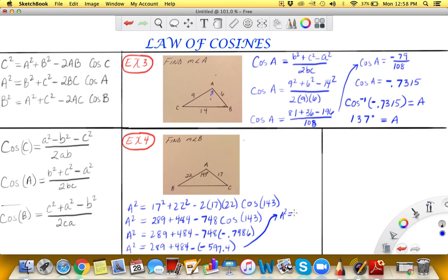If we take the square root of both sides we get A is equal to the square root of 1370.4 and then when we take the square root of that we'll get that A is approximately 37 units. So here we have 37 units for this side.